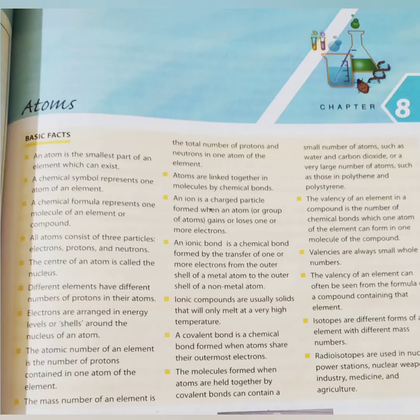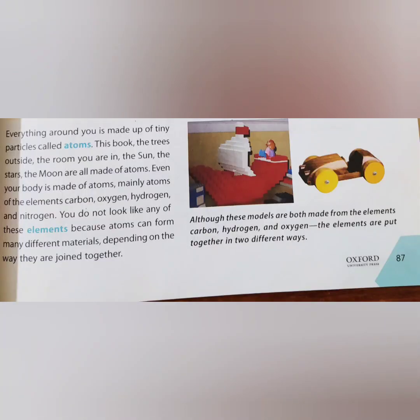An atom is the smallest part of an element that can exist. A chemical symbol represents one atom of an element. A chemical formula represents one molecule of an element or compound. All atoms consist of three particles: electrons, protons, and neutrons. Everything around us is made of atoms.